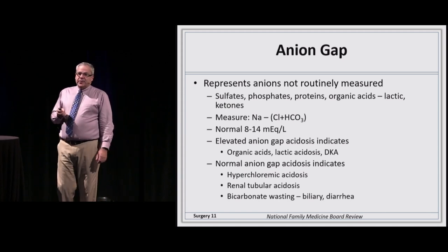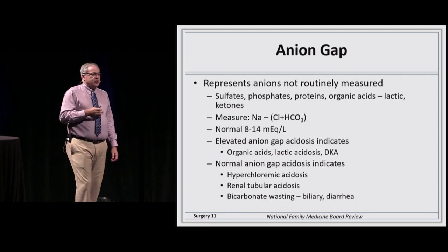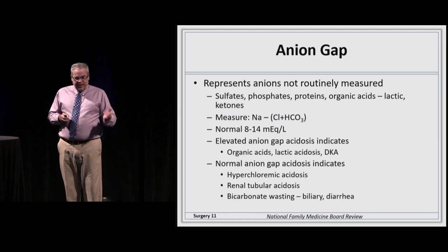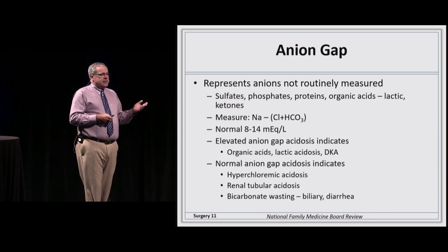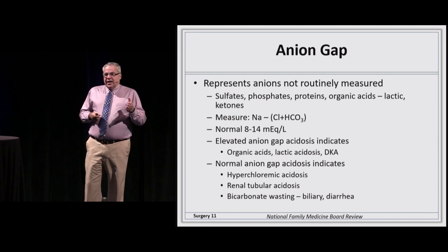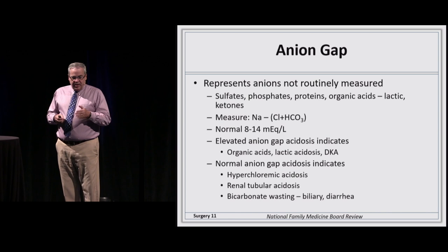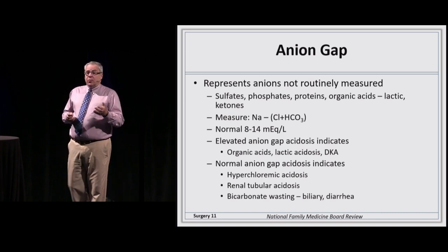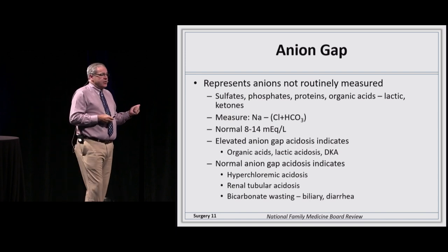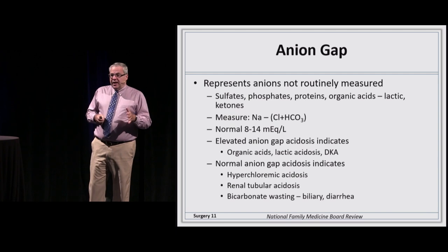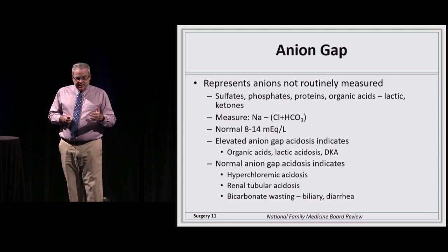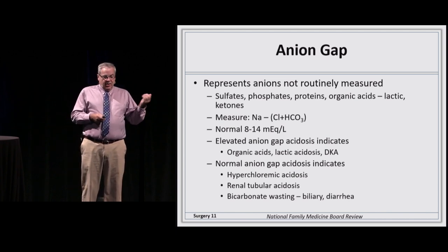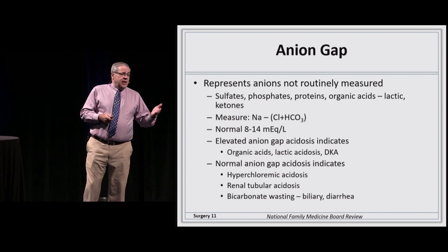The anion gap represents anions not routinely measured in blood. Routinely measured anions are bicarb and chloride; unmeasured ones include sulfates, proteins, and organic acids like lactate and ketones. To measure the anion gap: sodium minus (chloride plus bicarb). Normal anion gap is 8–14. Normal anion gap acidoses include hyperchloremic acidosis, renal tubular acidosis, and excess bicarb loss through diarrhea or the biliary tract. Elevated anion gap acidoses involve organic acid accumulation: lactic acidosis, DKA, and substances like methanol.